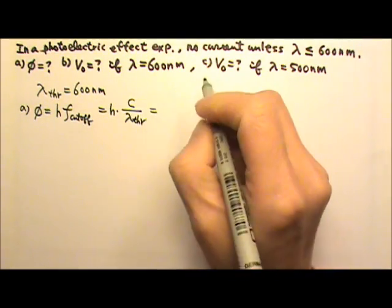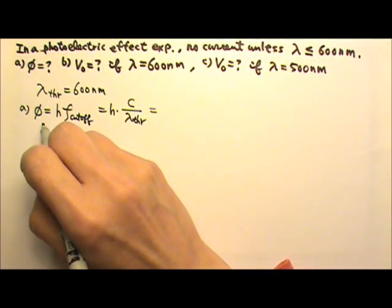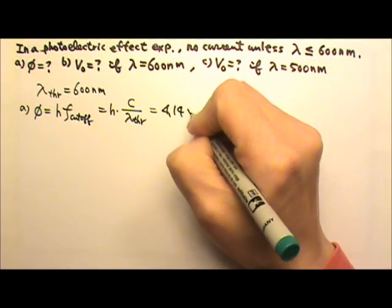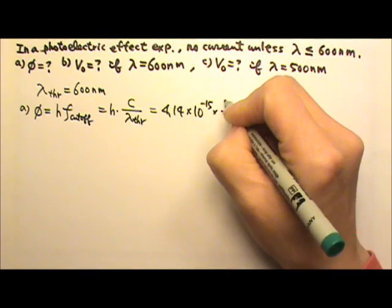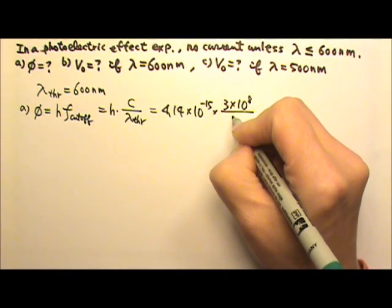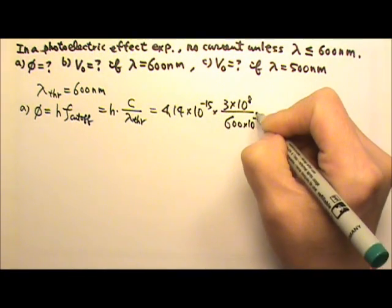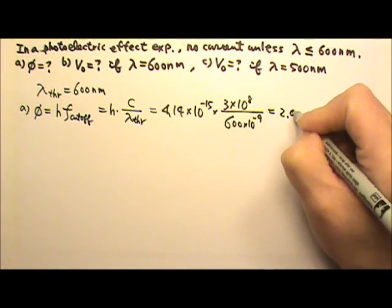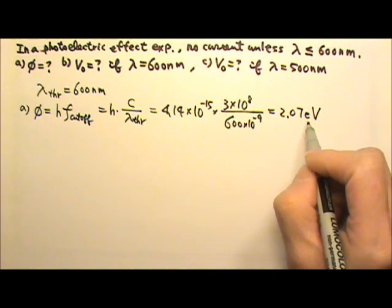To get the answer in electron volts, we use h = 4.14 × 10⁻¹⁵ eV·s and c = 3 × 10⁸ m/s, with the threshold wavelength of 600 nm. This gives a work function of 2.07 electron volts. If we want the answer in joules, we would use h in standard SI units instead.